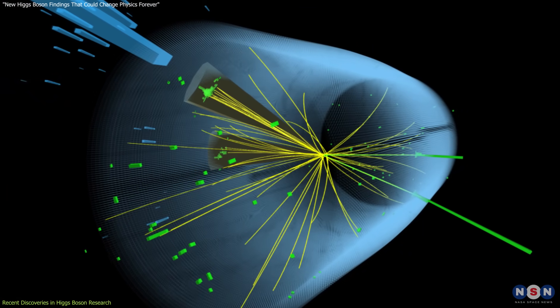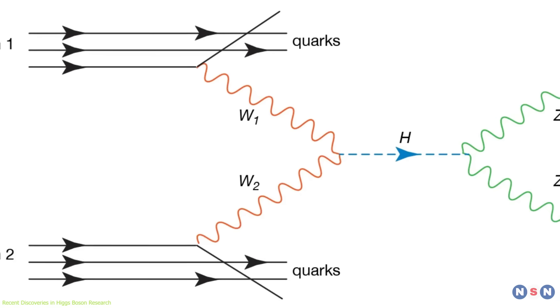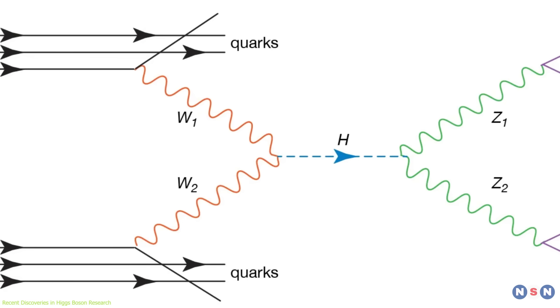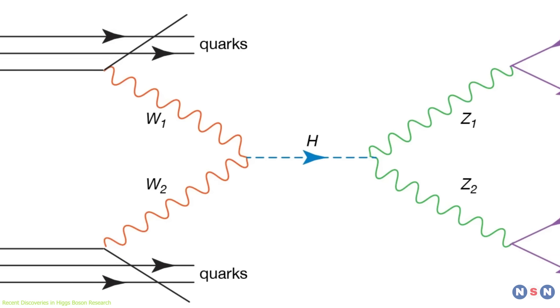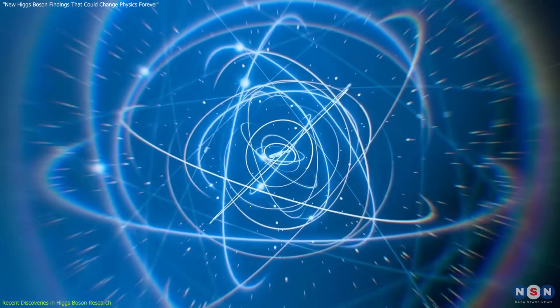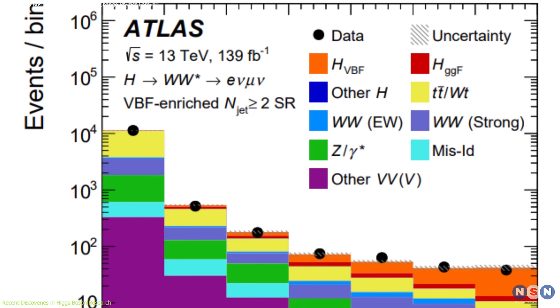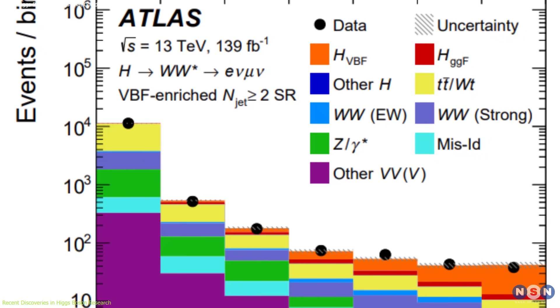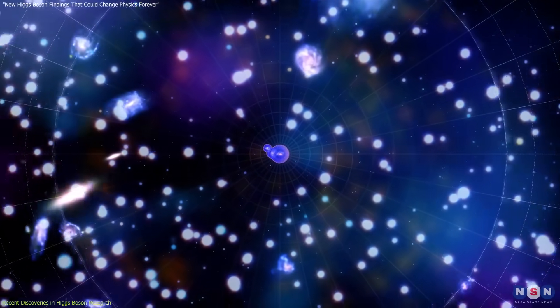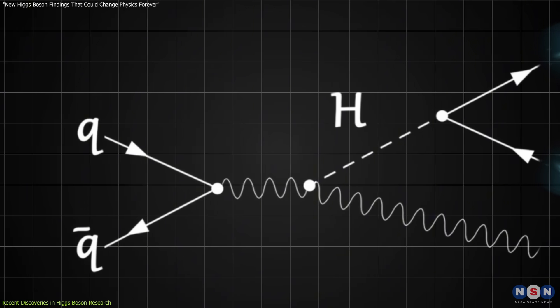Similarly, interactions between the Higgs bosons and Z bosons have been closely examined. Observed with a confidence level of 4.9 sigma, researchers noted a comparable decay pattern into bottom quarks, reinforcing theoretical models of particle physics. Though slightly less statistically significant than W boson interactions, these findings further confirm the Higgs boson's pivotal role in the Standard Model.